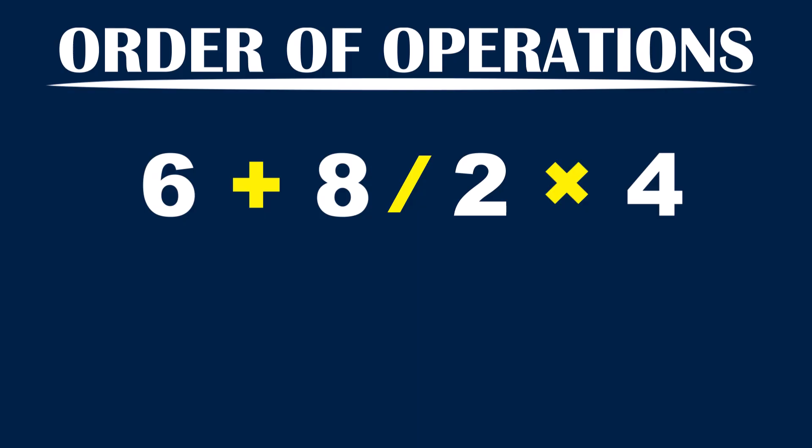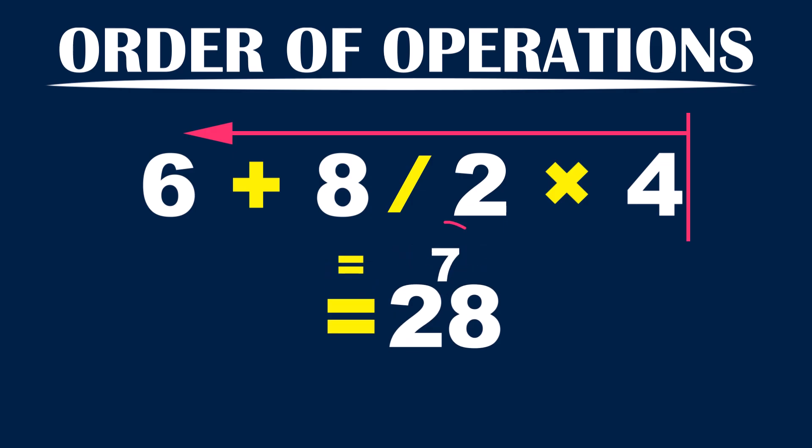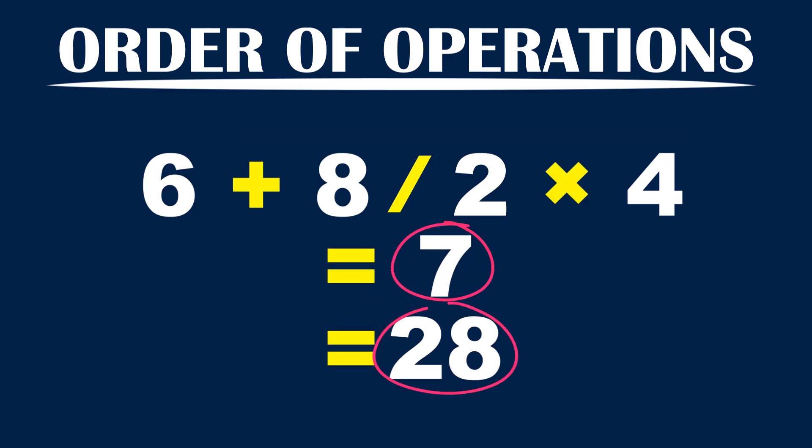For example, if you start the calculation from left and go to the right in order, that means if you first add six and eight, then divide that by two, and finally multiply that by four, you get 28. On the contrary, if you start from the right and go to the left, you get seven, which is obviously different from 28, and there is only one correct answer.